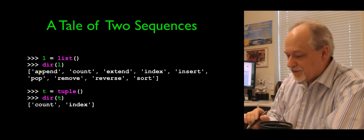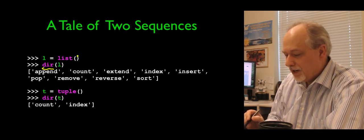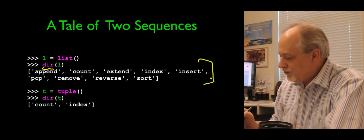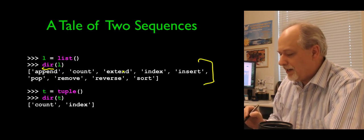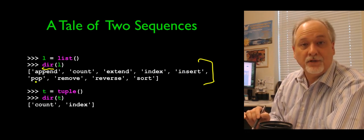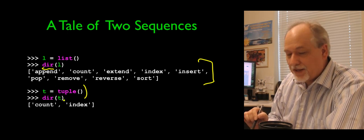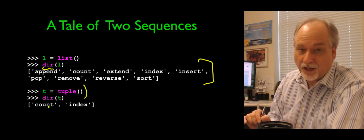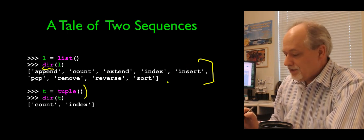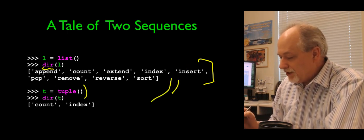And you can read the documentation. But we can also use that built-in dir function, that really awesome dir function, where we make a list and we say, hey Python, what will you let me do with lists? Well, you can append, count, extend, index, insert, sort, reverse, remove, pop. Lots of things. Now we make a tuple and say, hey Python, what can we do with a tuple? Well, you can do a count or an index, which means you can't do all these other things. So this is very much a reduction.